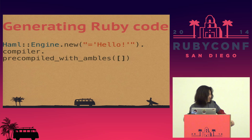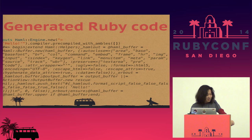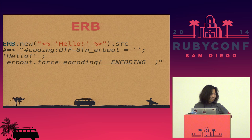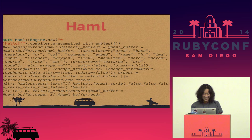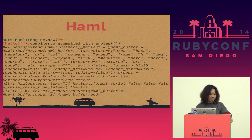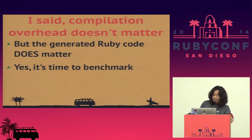This is how ERB outputs 'hello', and this is how Haml outputs 'hello'. The Haml code is much more complex — it prepares a massive number of objects. It apparently looks like slow Ruby code. I said compilation overhead doesn't matter, but if the generated Ruby code looks like this, the execution speed does matter.